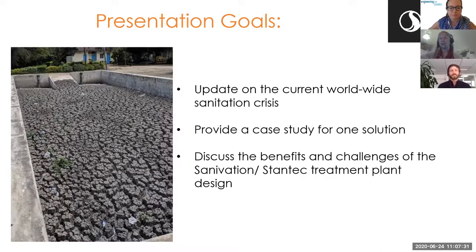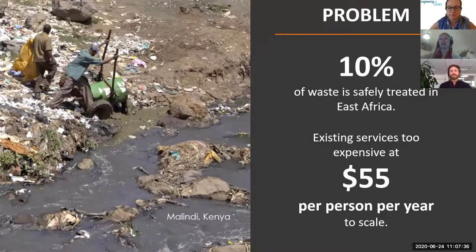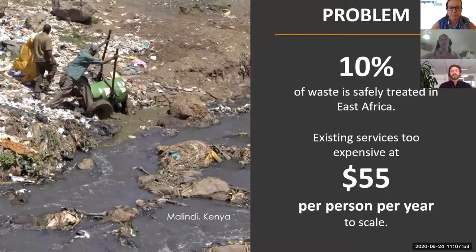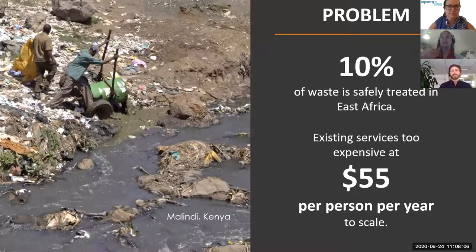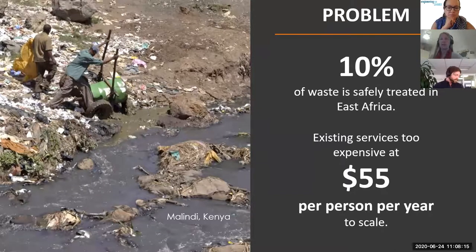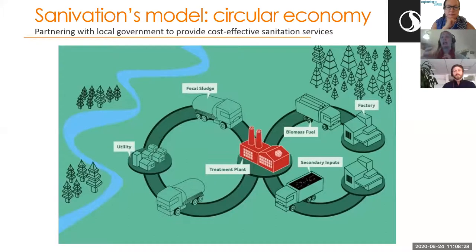When we talk about fecal sludge, that term refers to everything that's non-sewered — pit latrines and septic tanks primarily, but there are other options as well. Less than 10% of fecal sludge is treated before it's dumped into the environment here in East Africa. That untreated waste infects soils and water, then gets into humans. Diarrhea is still the second leading cause of death for children under five in Kenya — which is mind-blowing.